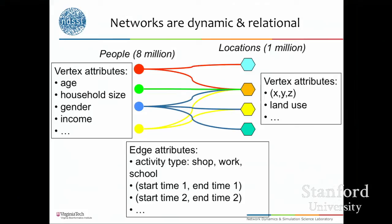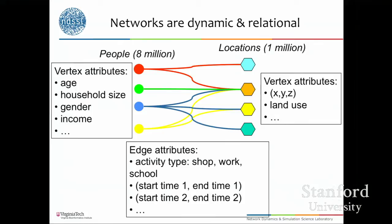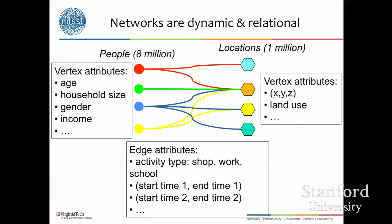The edges represent activities. A person might visit a location at a particular time, then go to another location, and so on. You can build out a contact network from this — for flu, if people are in the same location for a particular period of time, you put an interacting edge between them. This is a matter of convention. For a different disease that is not aerosol-borne, the notion of an edge changes. These networks are very large — Chicago has 8 million odd people, now almost 10, with million-plus locations and edges that change in time.